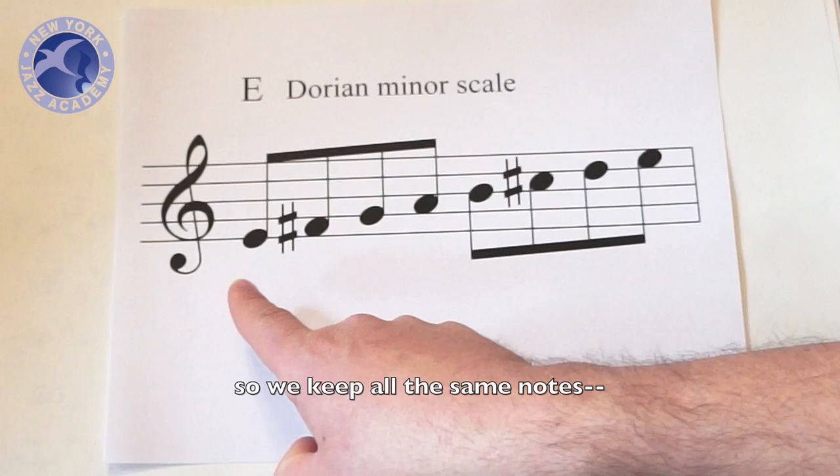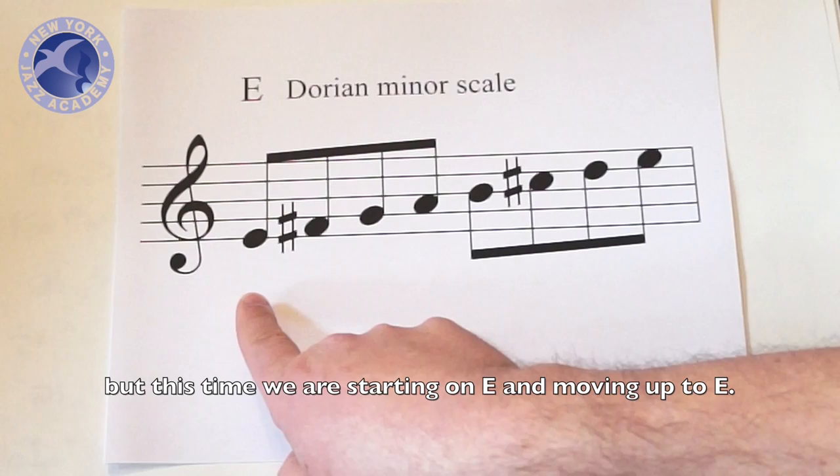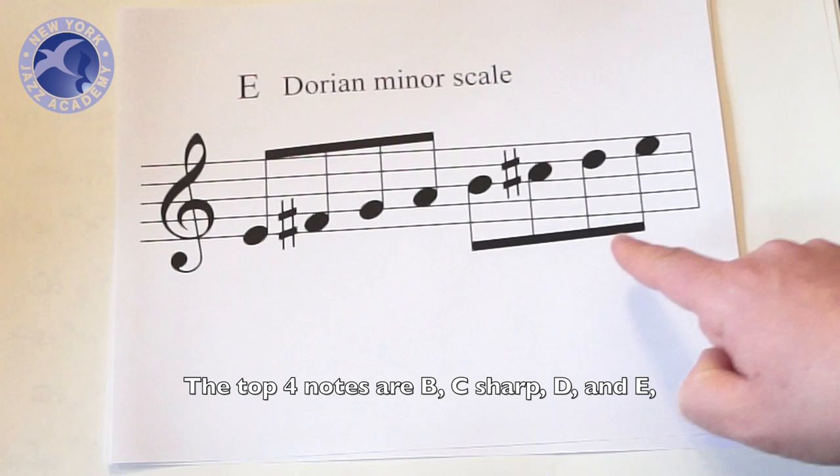Let's take that scale and move it up a step so we keep all the same notes. You see the F sharp and the C sharp, but this time we are starting on E and moving up to E. The top four notes are B, C sharp, D, and E.